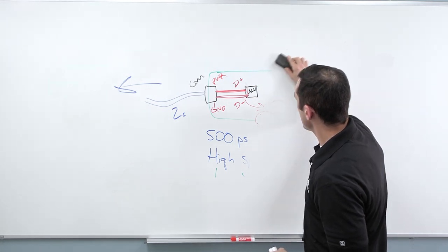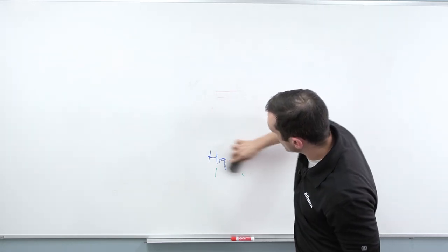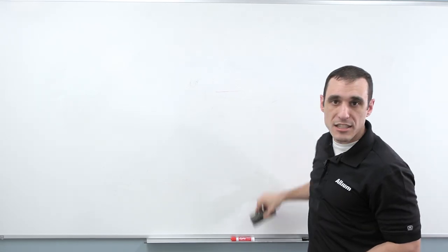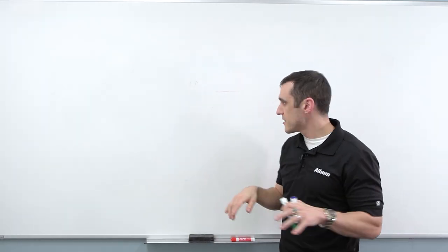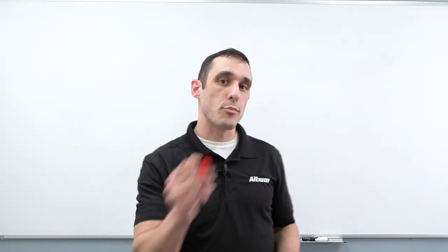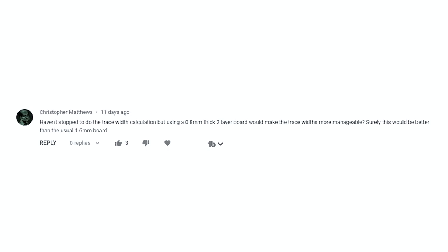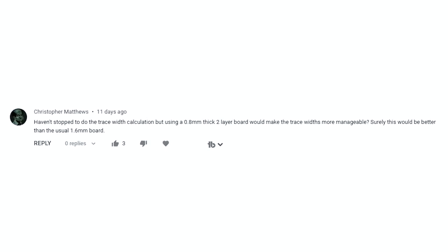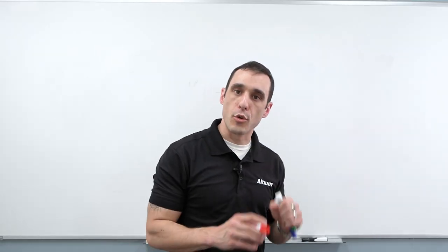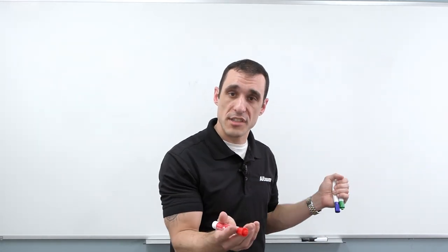Another important point we alluded to in the previous video: how wide do traces need to be for a two-layer board, and what spacing do you need between differential pairs? There was a question on the previous YouTube video. Christopher Matthews writes: 'Haven't stopped to do the trace width calculation, but using a 0.8 mm thick two-layer board would make the trace widths more manageable. Surely this would be better than the usual 1.6 mm board.' Christopher is exactly right — it is easier to work with traces on a 0.8 mm or 1 mm board than the full 1.6 mm board.